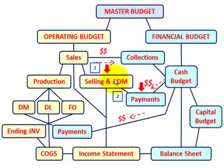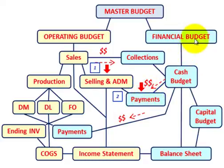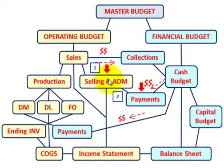The other thing entailed with the selling and administrative expense budget is the cash payments we have to make. Those cash payments are tied into our financial budget and fall under the cash budget. So the cash budget is going to pay for the selling and administrative costs. We need to understand that our selling and administrative budget must come under our sales budget.